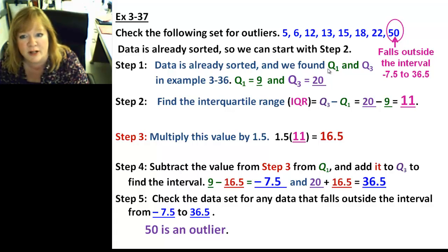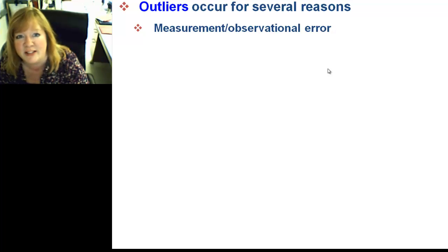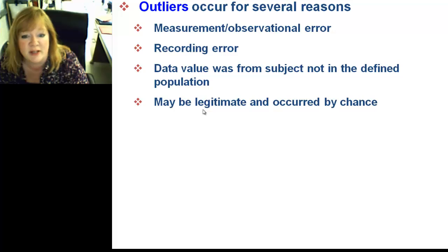Okay. So, let's see what else we got. Outliers can occur for several reasons. Measurements or observational error could cause an outlier. A recording error could cause an outlier. Or, the data from the subject was not in the defined population. For example, they tested all the kids in my algebra class. It was supposed to be all the 8th graders. But, I had one 7th grader. He didn't fall into the population. So, that's what they mean. And then, it might be legitimate and occurred by chance. But, the probability of that would be small. So, in other words, something weird happened and it actually is a real value.